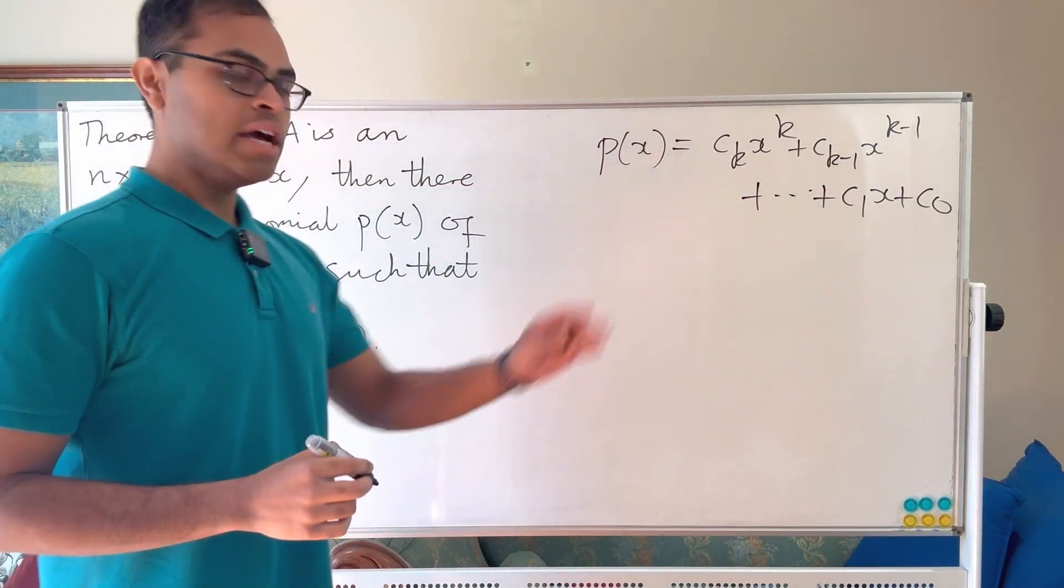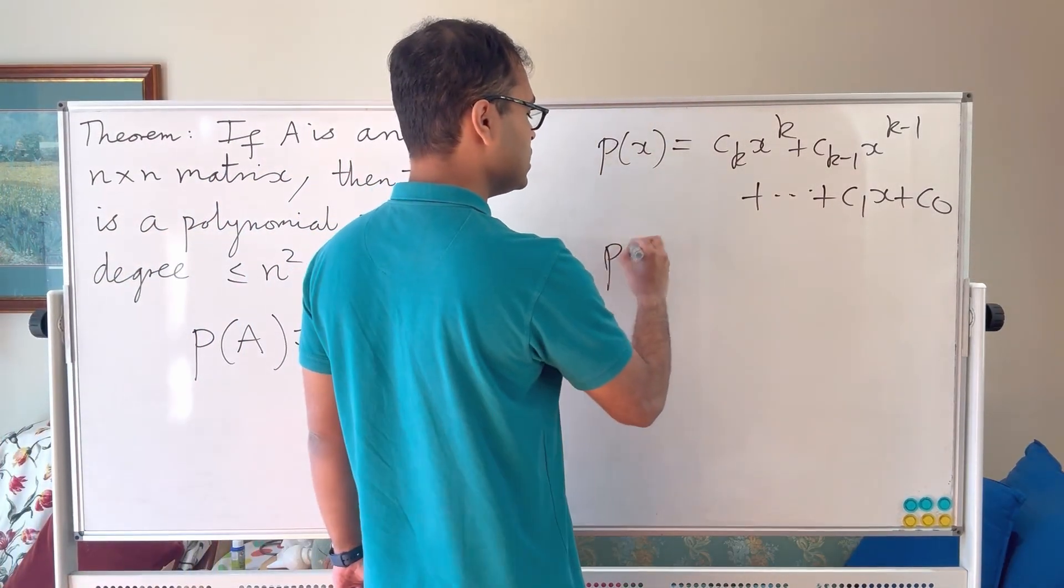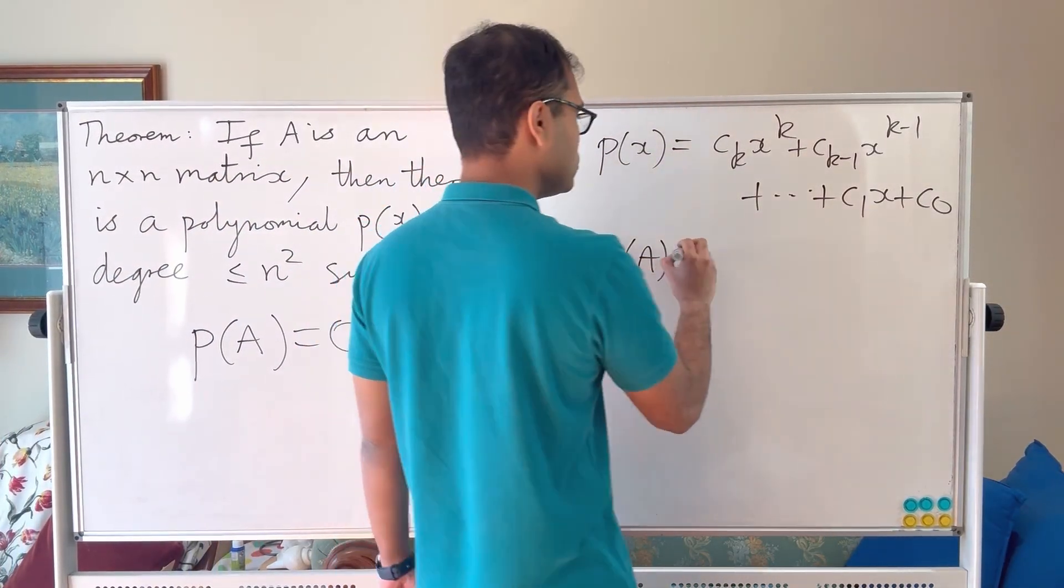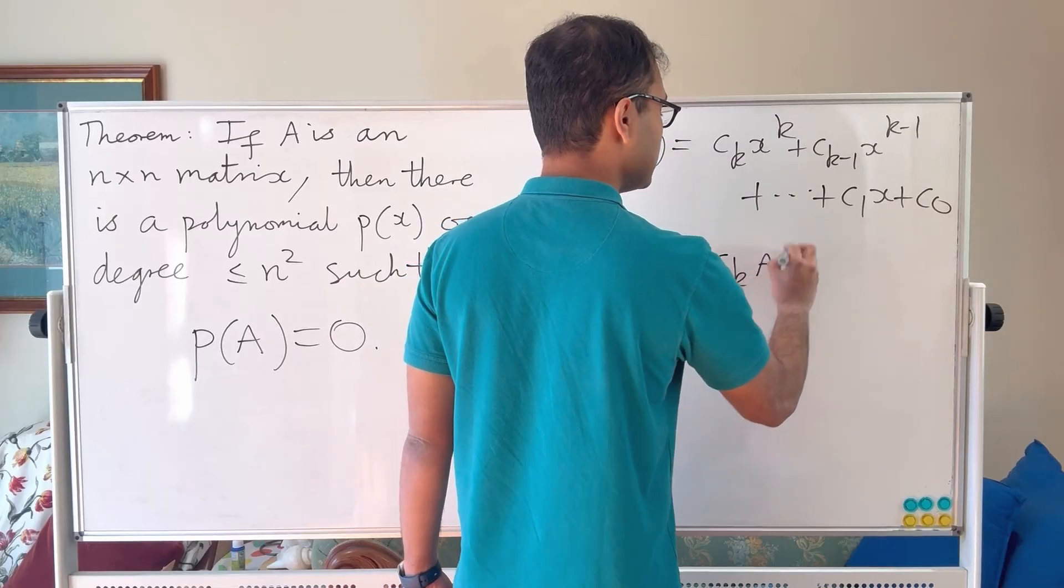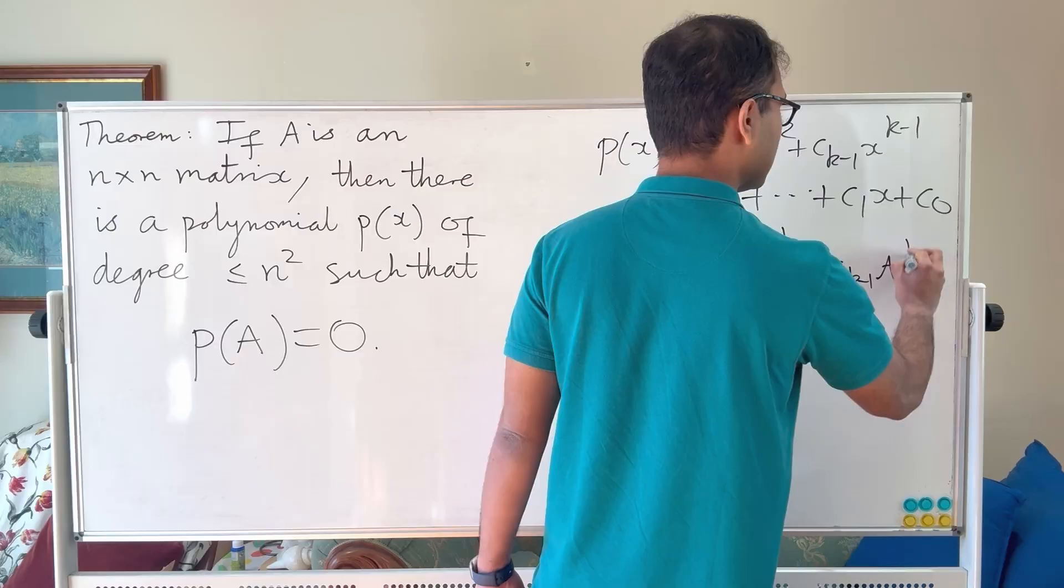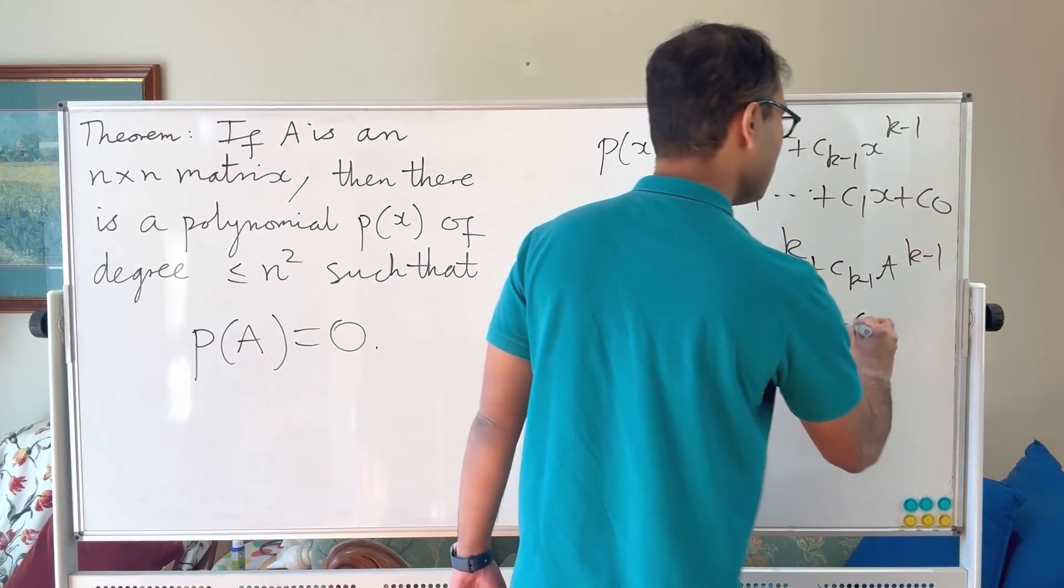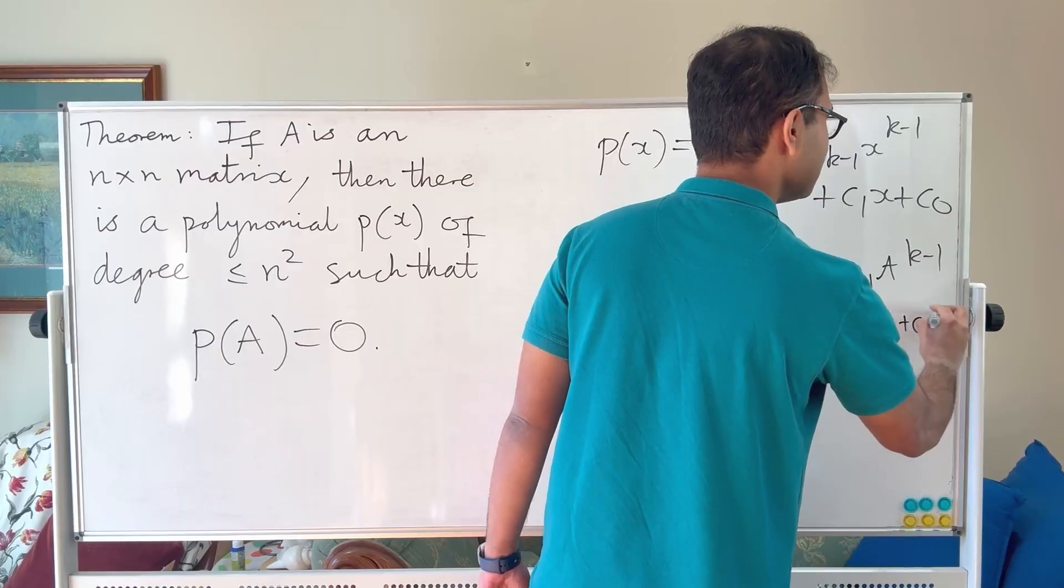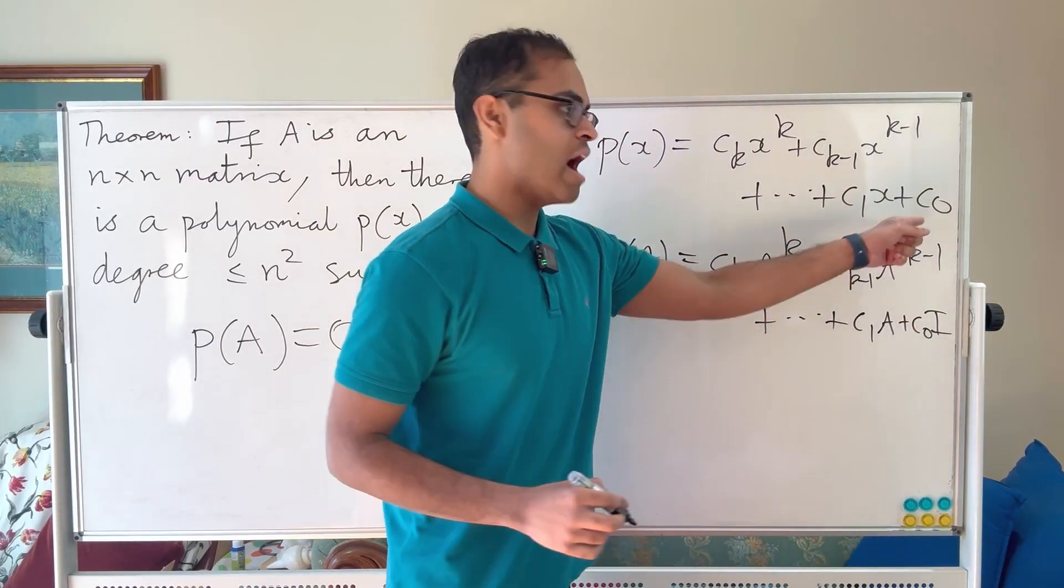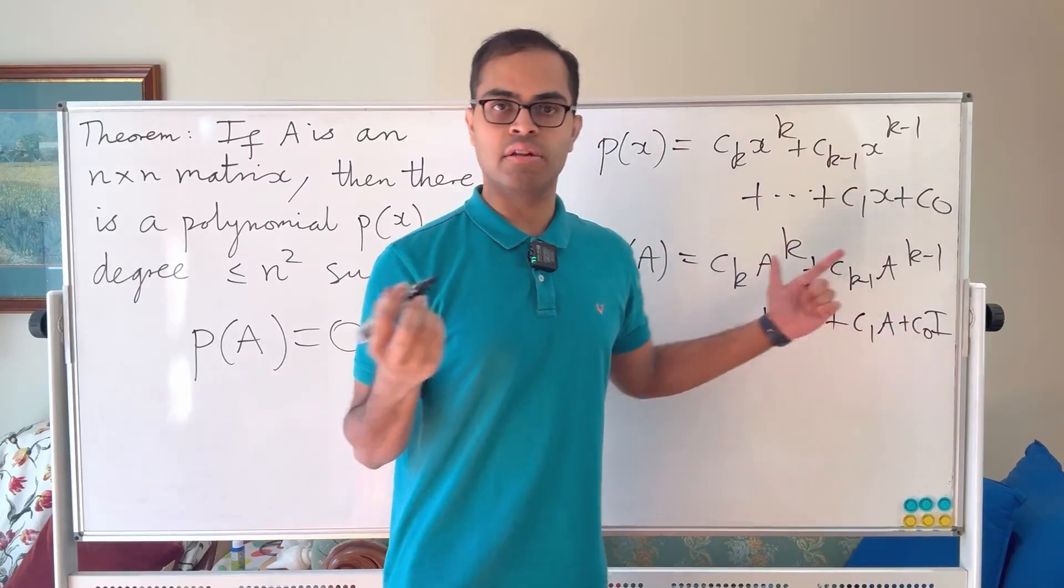If we wrote it in this form, then evaluating the polynomial on the matrix A would look like P of A equals C_k A to the k, where you take the kth power of the matrix, plus C_{k-1} A to the k minus 1, and so on, all the way up to C_1 A plus C_0 times the identity, because of course you can't add on a scalar to an n by n matrix, so you have to multiply with the identity to make sense of that.